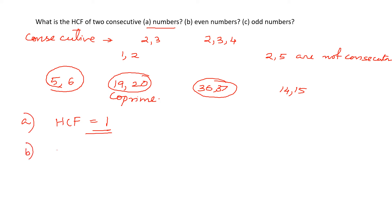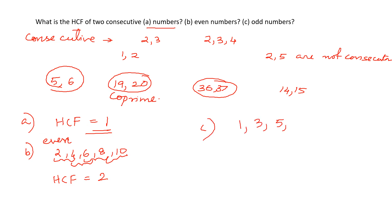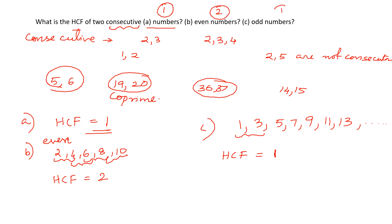Part B: consecutive even numbers. Even numbers are 2, 4, 6, 8, 10. Any 2 nearby even numbers — like 4 and 6, or 8 and 10 — always have 2 as a common factor. So HCF of any 2 consecutive even numbers is always equal to 2. Part C: consecutive odd numbers — 1, 3, 5, 7, 9, 11, 13. For example, 1 and 3 — is there any common factor? No. When there is no common factor, HCF is equal to 1. So HCF of any 2 consecutive odd numbers is 1.